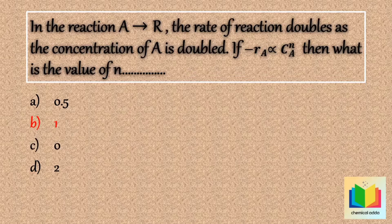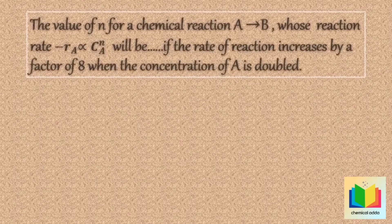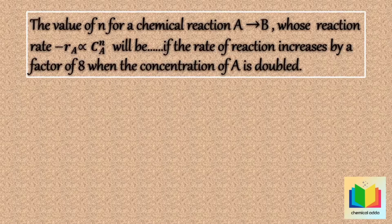Now the next question. The value of n for a chemical reaction A gives B, whose reaction rate minus rA is proportional to cA raised to n, will be — if the rate of reaction increases by a factor of 8 when the concentration of A is doubled.